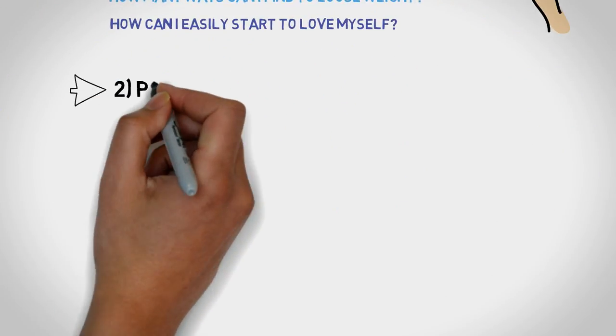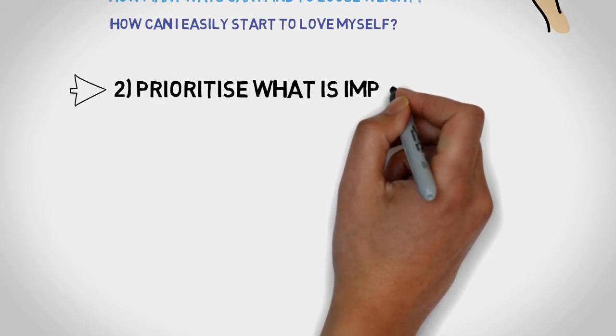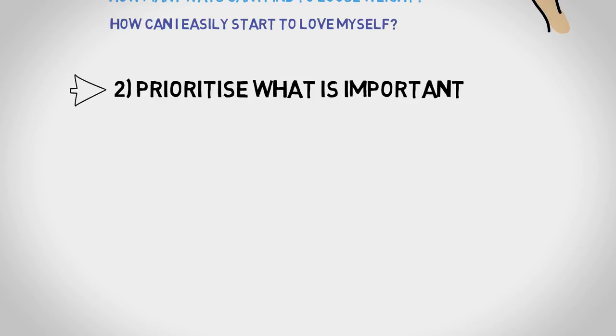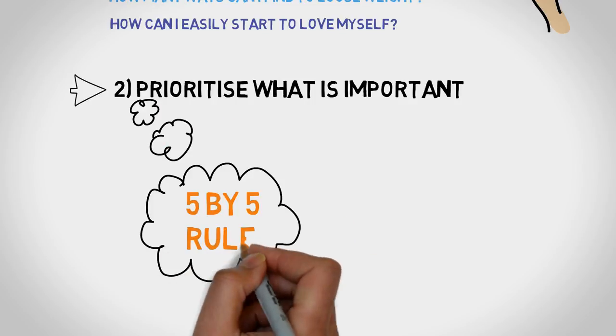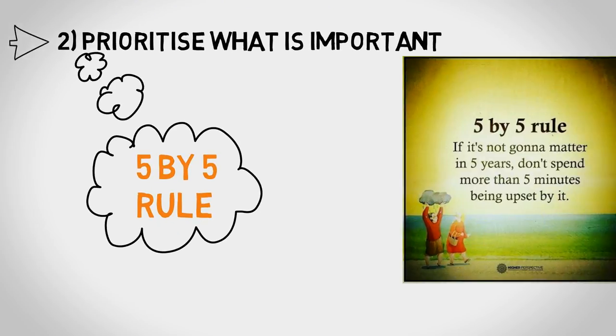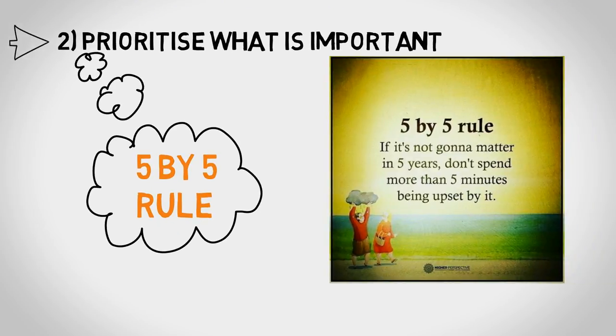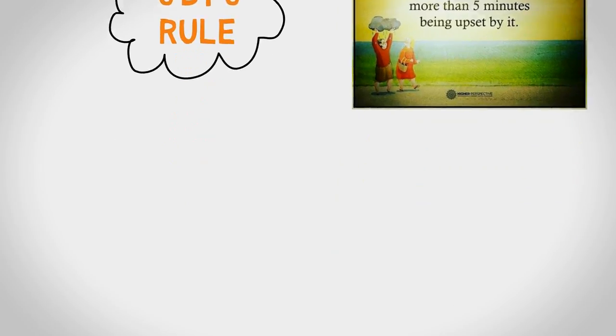Number two, prioritize what is important. There's a really lovely rule which is called the five by five rule. Which is, if it's not gonna matter in five years, don't spend more than five minutes being upset by it.